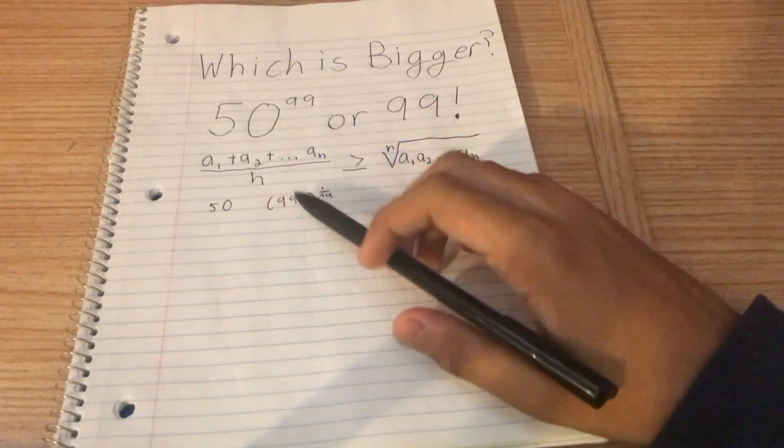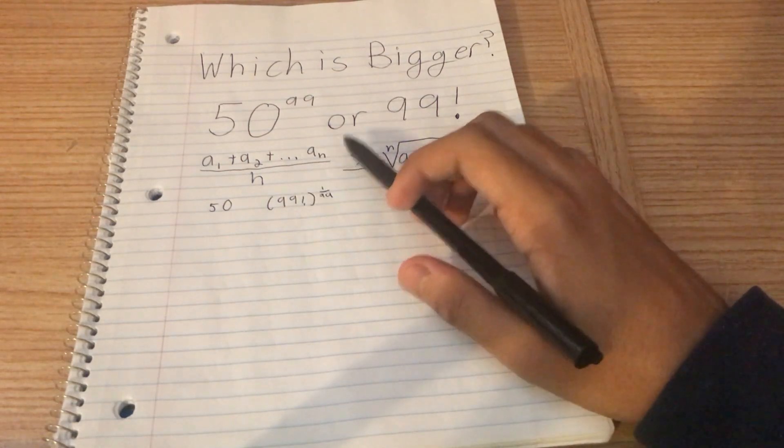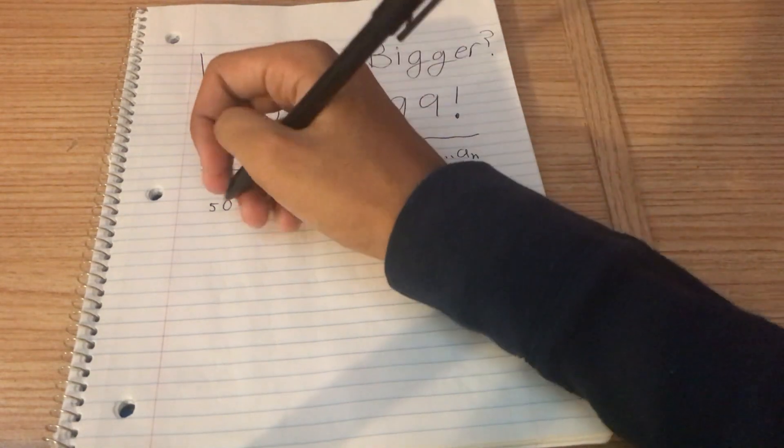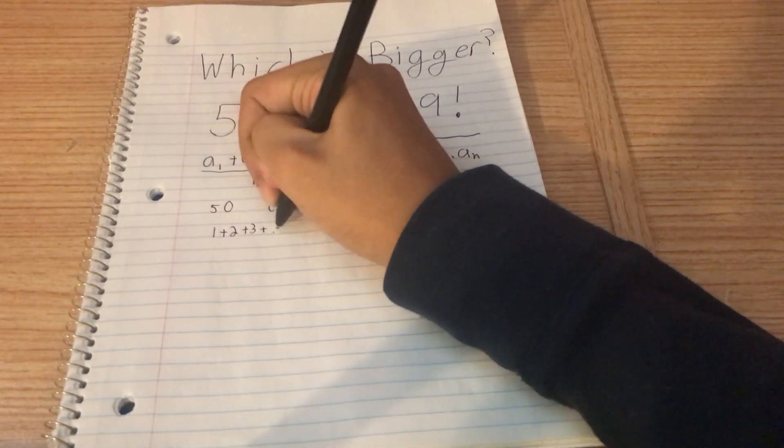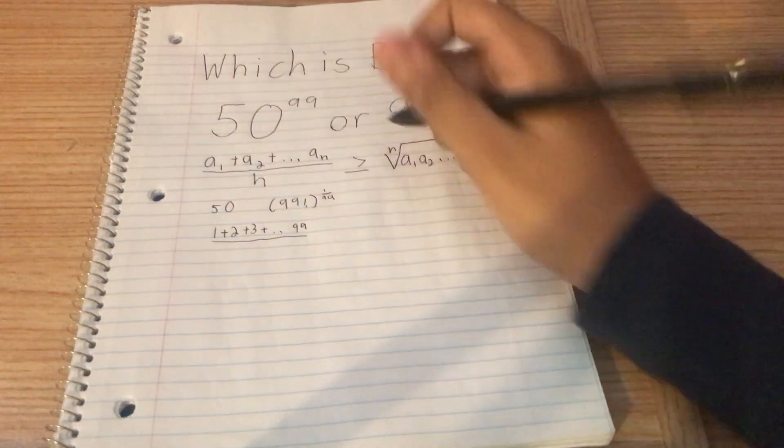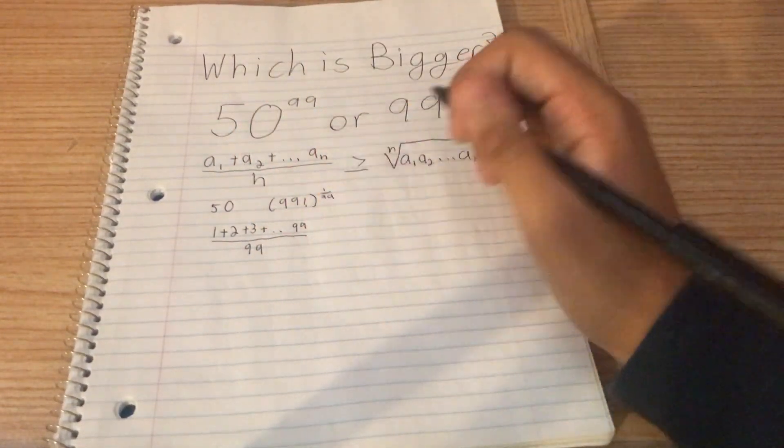Let's say 1 is A1, 2 is A2, all the way to 99 is A of 99. So let's try that. We get 1 plus 2 plus 3 plus all the way to 99 divided by the number of terms, which in this case is 99. There are 99 terms in this sequence.